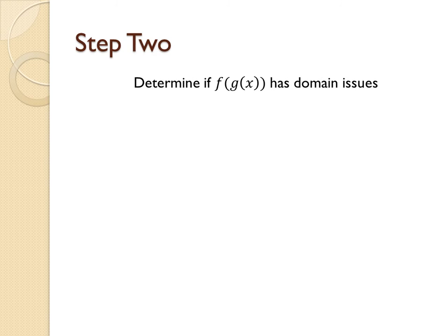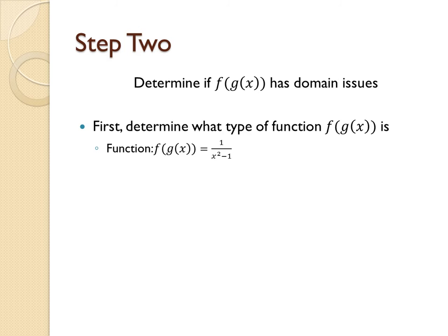For step 2, we need to determine whether the composition, f composed with g of x, has domain issues. Again, we first need to determine what type of function this is. We're going to start by looking at the composed function, which is 1 over x squared minus 1. In this case, our composed function is a rational function.